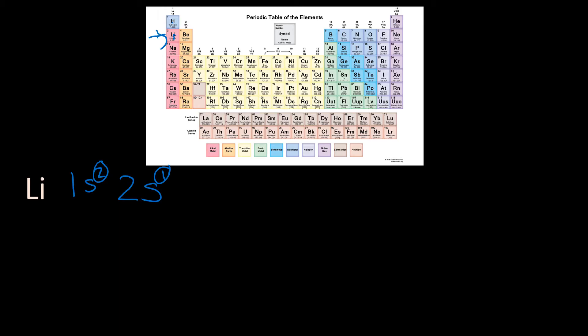There is another method we need to talk about — it's called the box method. It tells us more about which of the sub-orbitals the electrons are in. So if we do the box method, we have one s orbital in the first energy level and no p's. In the second energy level we have two s. We do the electrons: one, two. I have to finish the first energy level before I go to the next one. So 1s, then 2s — that is the box method.